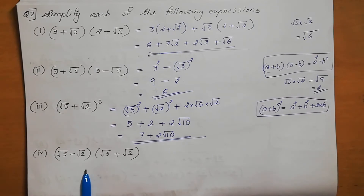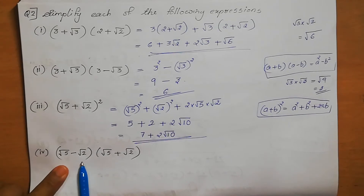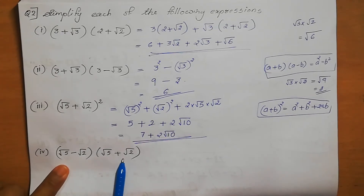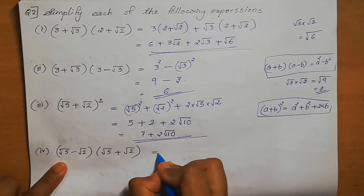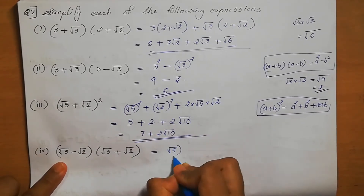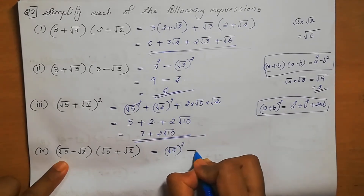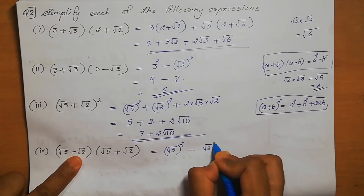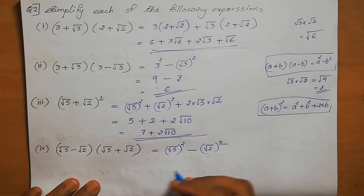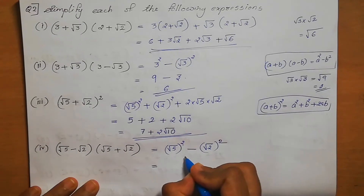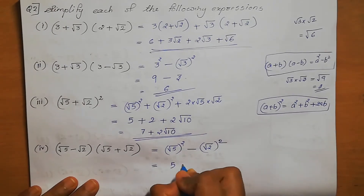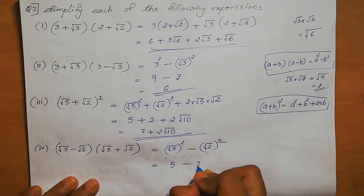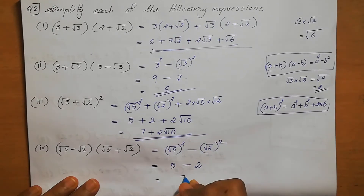Fourth one: (root 5 minus root 2) into (root 5 plus root 2). This is again in the form (a - b)(a + b) = a squared minus b squared. Here a equals root 5 and b equals root 2. Root 5 squared minus root 2 squared is 5 minus 2, giving the answer 3.